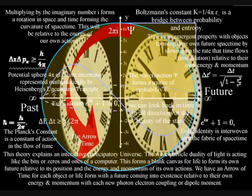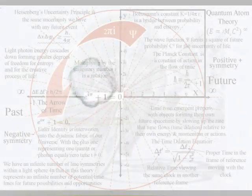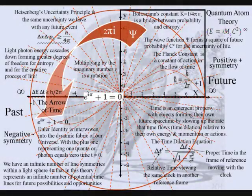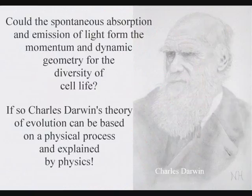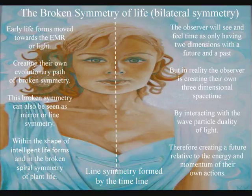Spherical geometry will naturally form three-dimensional space, and we have an infinite number of line symmetries within a sphere. In this theory, these line symmetries represent an infinite number of potential timelines for future possibilities and opportunities. Intelligent life will form its own evolutionary path out of these potential line symmetries, and because this is a geometrical process with life as an integral part, this line symmetry will be visible in the physical shape of intelligent life, in the form of left- and right-handedness. This process forms a potential infinity of possibilities, with creation in the hand and eye of the beholder.